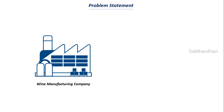First let's understand more about this problem statement. Consider that there is a wine manufacturing company, and this company wants to create a new brand of wine. Let's say that you are an experienced data scientist and they want you to find the quality of the wine using several chemical parameters like acidity, citric acid content, sugar content, etc. We are going to build a machine learning system that can take all these chemical values and tell you whether the quality of the wine is good or not.